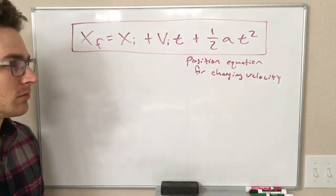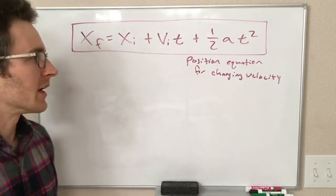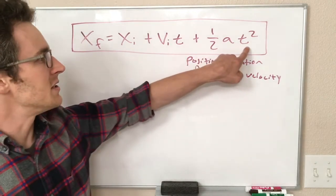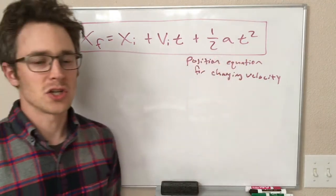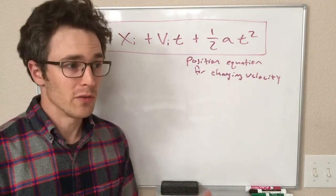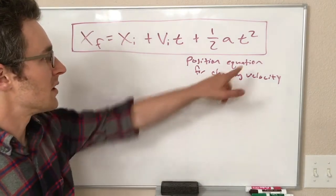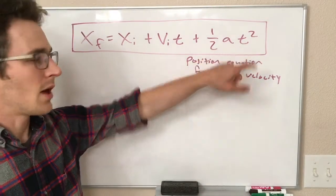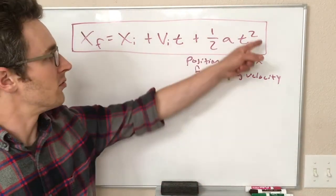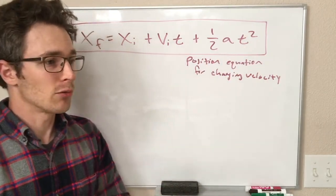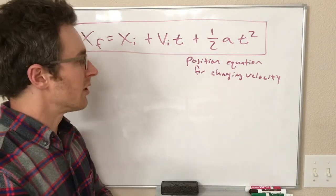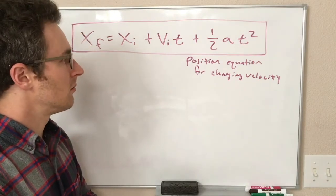So the effect of that is that this one-half at squared, this is how much the acceleration is changing the position of your object. And because this is t squared, as time passes by, the effect of this term can be really, really big. Acceleration can really affect the motion of your object.